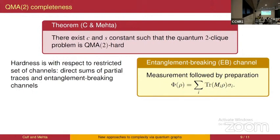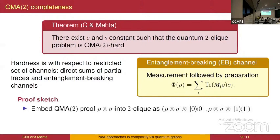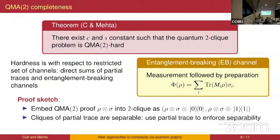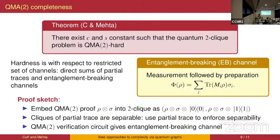An entanglement breaking channel is just a measurement followed by a state preparation. The hardness proof works by encoding a QMA2 proof — which is the tensor product of two states — as a two-clique: you take this tensor product and tensor on another qubit (which could be 0 or 1) to guarantee orthogonality of the two states in the clique. The channel constructed for hardness uses a partial trace first to enforce separability of the states in the clique, and an entanglement breaking channel to verify that the states both give proofs that accept with high probability.